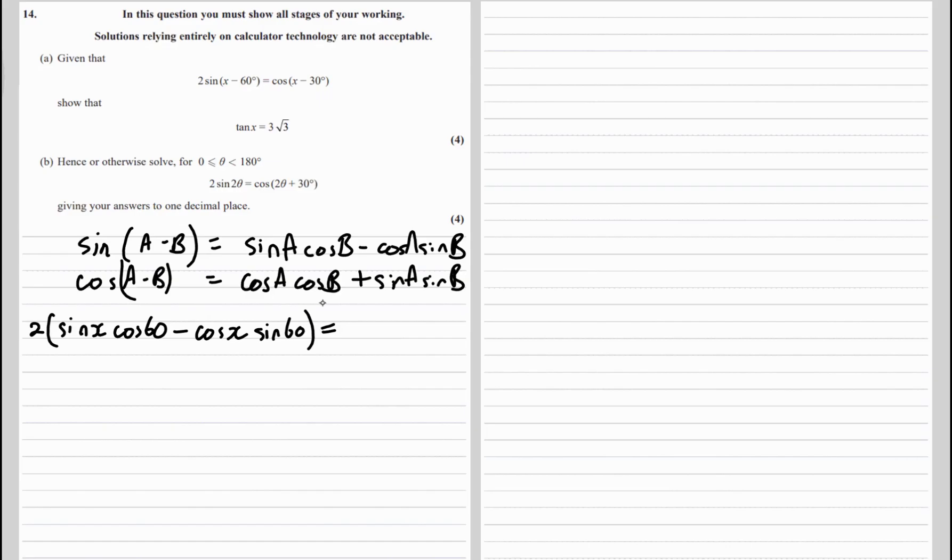And that's going to equal cos x minus 30, so the cos a minus b: cos x cos 30 plus sine x sine 30.